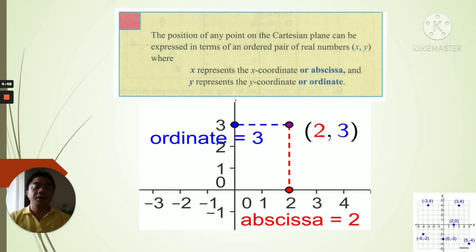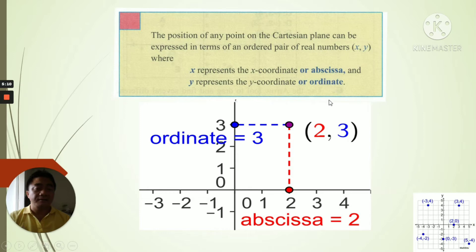Remember that the other name for the x-coordinate in an ordered pair is the abscissa, and the other name for the y-coordinate is the ordinate. For example, in the coordinate (2, 3), 2 is the abscissa and 3 is the ordinate. This point (2, 3) is located in Quadrant 1.